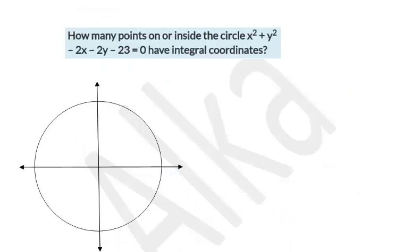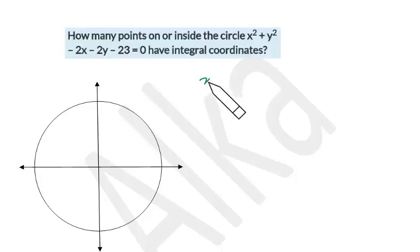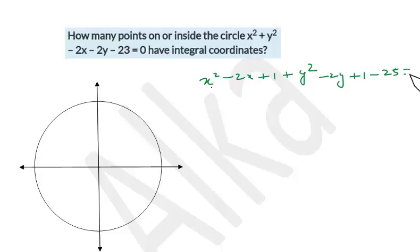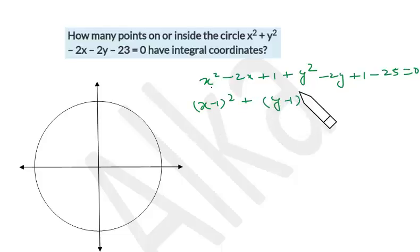Let's see this problem: how many points on or inside the circle x² + y² - 2x - 2y - 23 = 0 have integral coordinates? First, we convert this into standard center-radius form by completing the square: x² - 2x + 1 + y² - 2y + 1. Since we added two ones, instead of minus 23 it becomes minus 25, giving us zero.